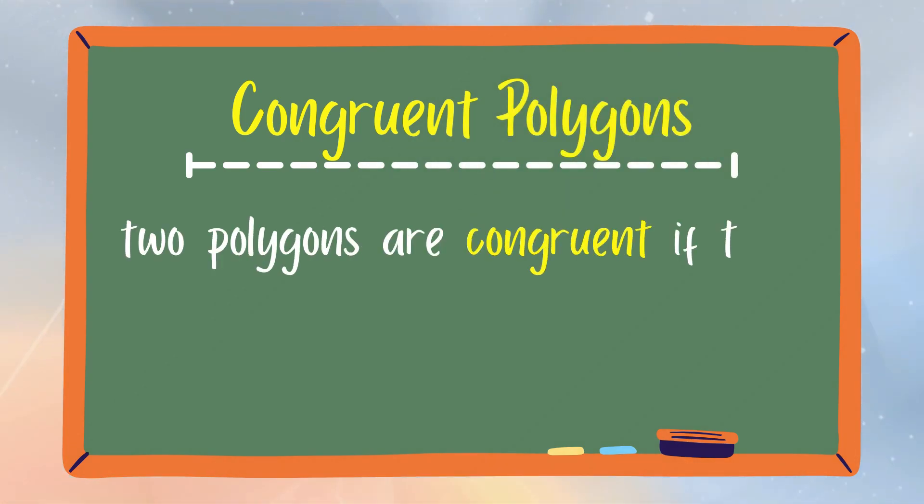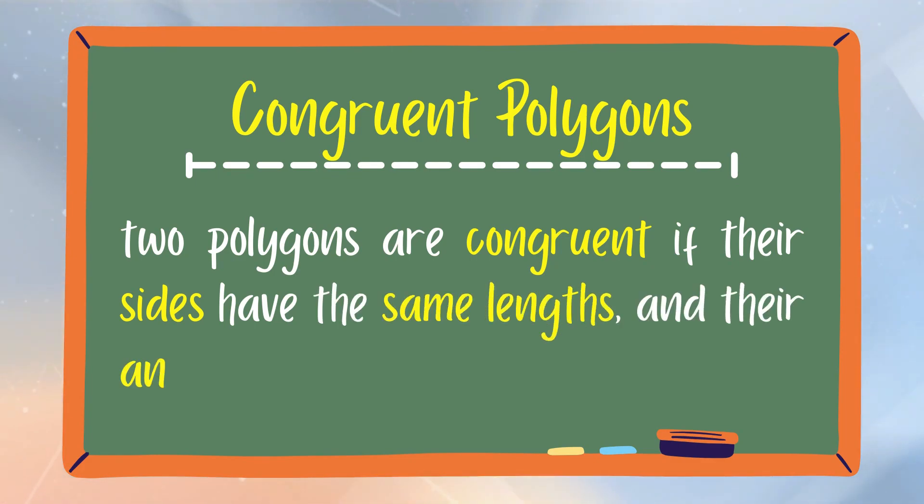We can say that two polygons are congruent if their sides have the same lengths and their angles have the same measure.